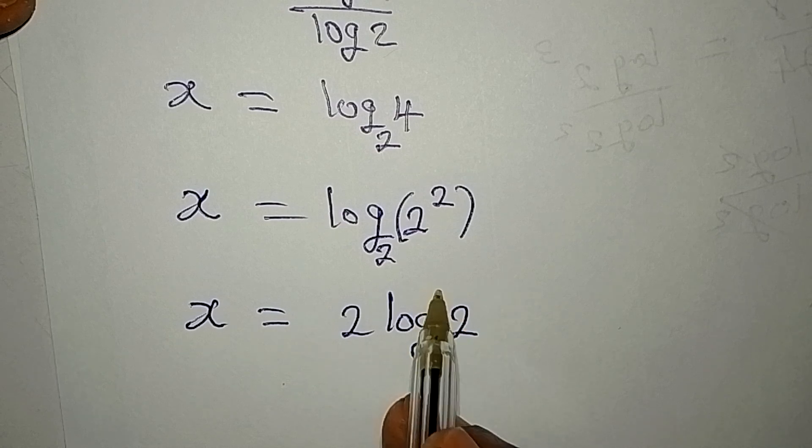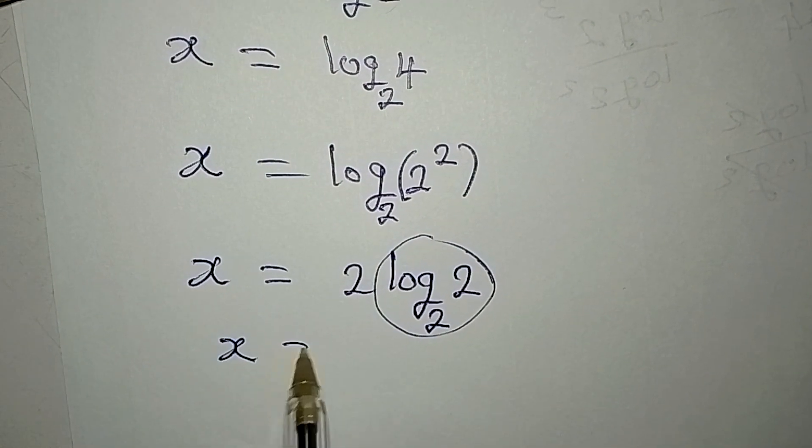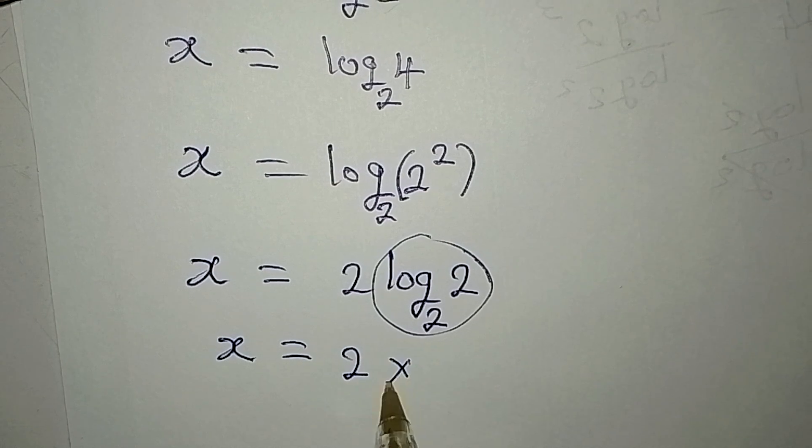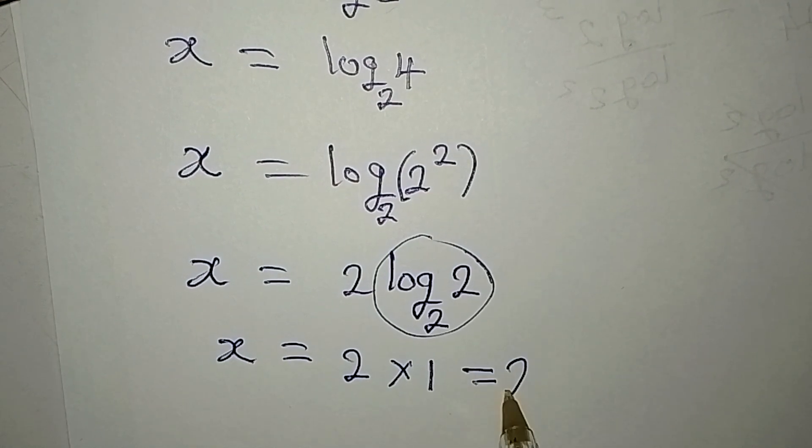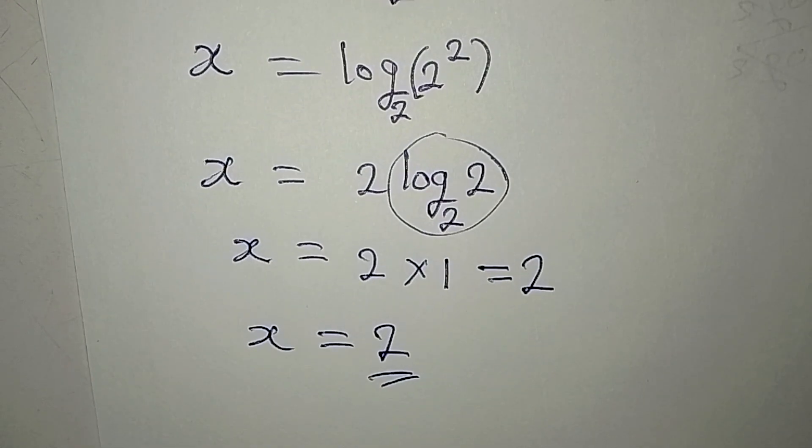what happens is that the whole of this will be equal to 1. So our x will be equal to 2 multiplied by 1, and that is 2. So the value of x is 2.